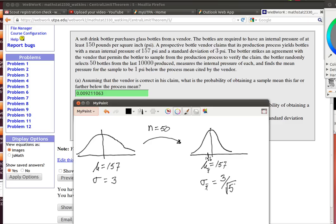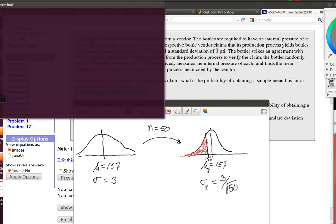Now what our first question is asking is, how do you find this area to the left of 156? So we're looking for this red area over here. And of course you all know this is a normal distribution. It's got a mean of 157 and a standard deviation of 3 divided by the square root of 50.